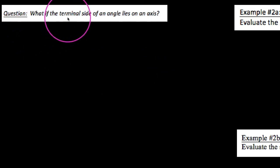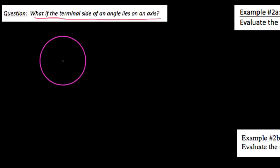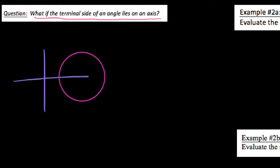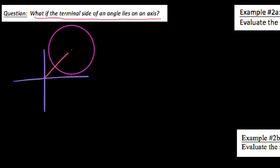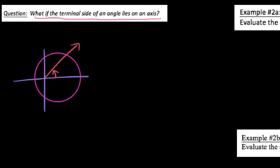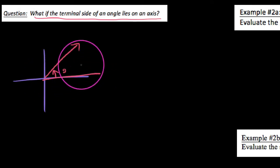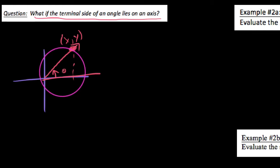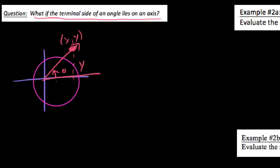In this video we're going to discuss what happens if the terminal side of our angle actually lies on an axis. If we had some angle theta in standard position, as long as we know a point xy on the terminal side, we could drop down an altitude and say this must be the distance y, this must be the distance x, and we call this distance r.